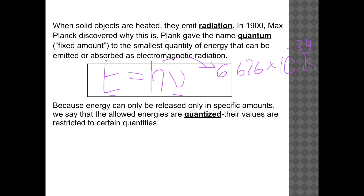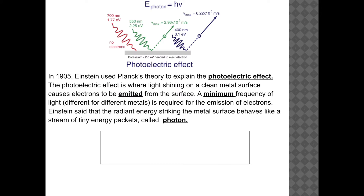Because energy is only released in specific amounts, we say the allowed energies are quantized — their values are restricted to certain quantities. A second phenomenon scientists wanted to understand was the photoelectric effect.